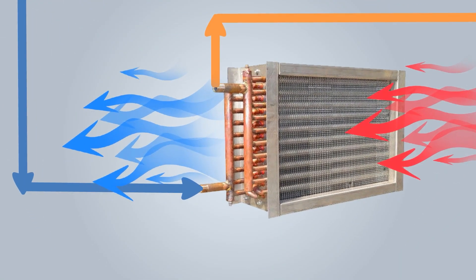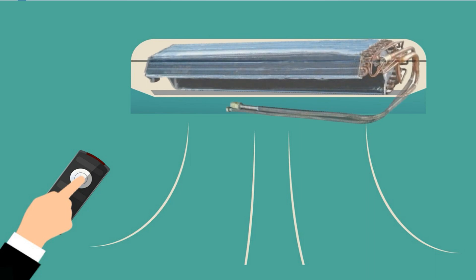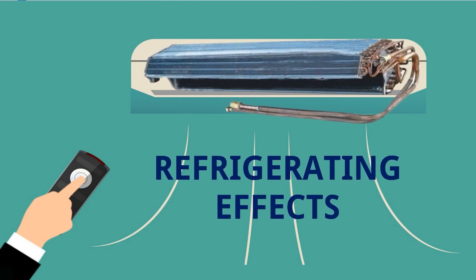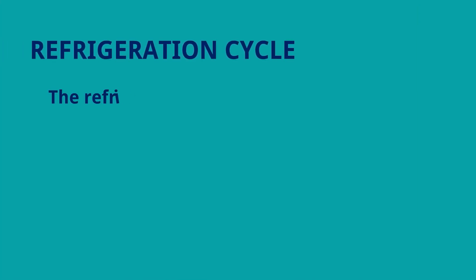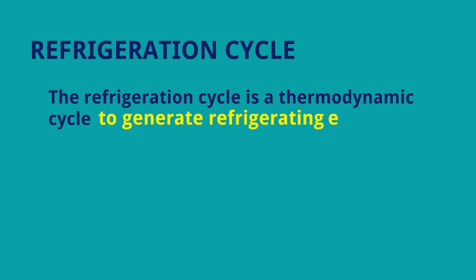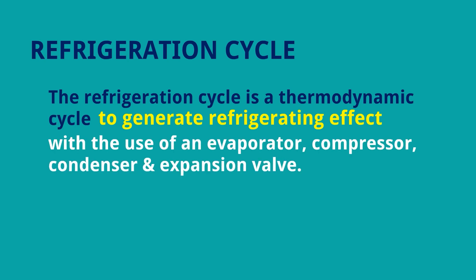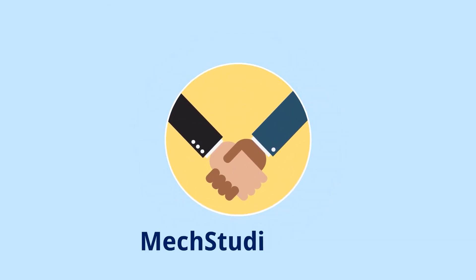We are getting cold air with the help of the evaporator. At home, we see our indoor unit — the evaporator coil is inside and we get the cooling or refrigerating effect. We can define the refrigeration cycle as: a thermodynamic cycle to generate a refrigerating effect with the use of an evaporator, compressor, condenser, and expansion valve. I hope the basics are clear — thank you so much, and please visit makestudies.com.